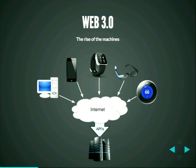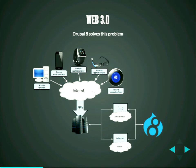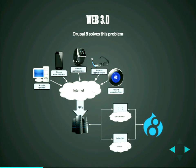Drupal 8 addresses this through how it handles every single request. Every device, when it sends a request to the server, attaches in the header what format it accepts — called the accepts header. Drupal 8 looks at that header and determines how to respond based on what the device says. If it accepts JSON, it delivers JSON content. If it's HTML, it delivers HTML content. This is really fantastic.